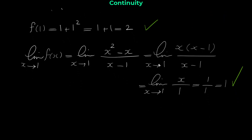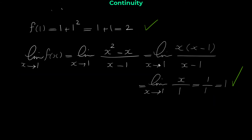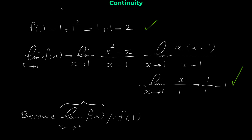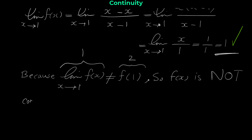However, this function has a problem. The limit of f of x when x approaches 1 is 1, but f of 1 equals 2. Because the limit does not equal f of 1, the third condition of continuity is not satisfied, and therefore f of x is not continuous at 1.